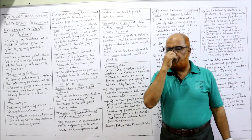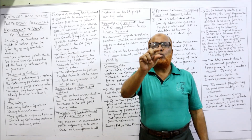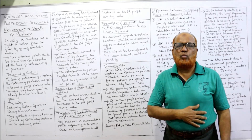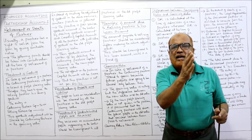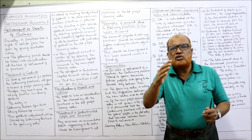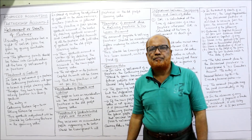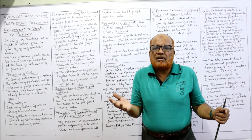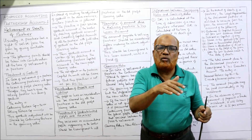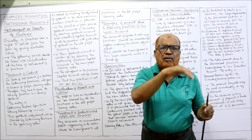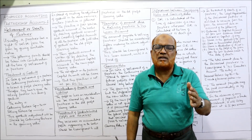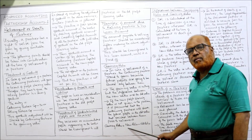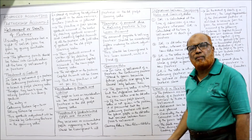For example, the old ratio was 1/3, 1/3, 1/3 and the new ratio is 1/2, 1/2. The new ratio is higher — 1/2 is more than 1/3. So the gaining ratio = new ratio minus old ratio. Remember this formula. In examination you may get a theory question regarding the differences between sacrificing ratio and gaining ratio.